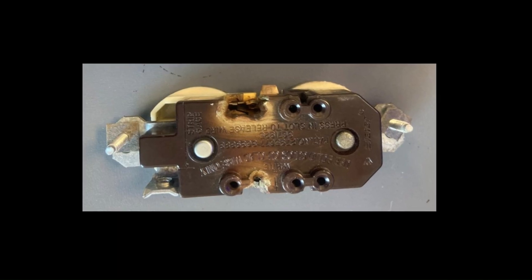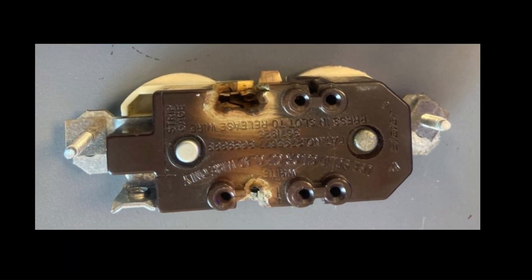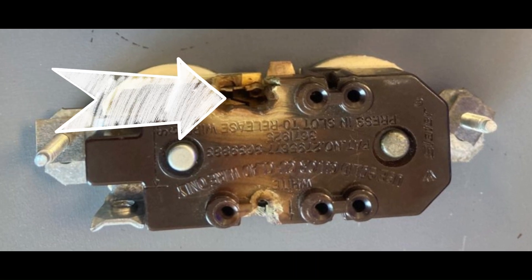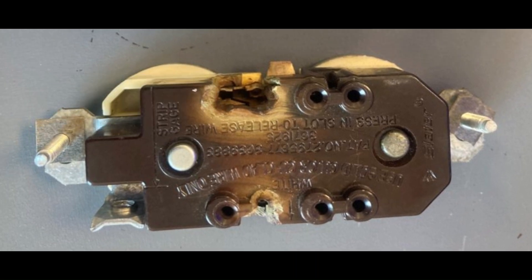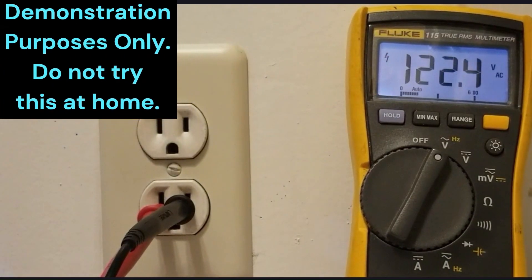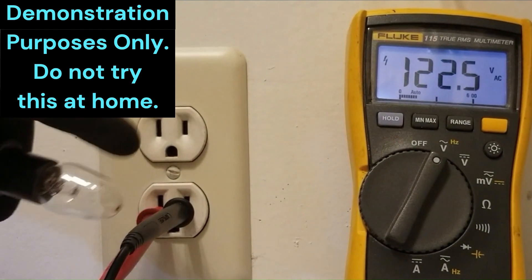Outlets that use backstab connections often develop loose connections over time due to resistance in the backstab terminals. As these connections degrade, they generate heat which can further worsen the problem. This can happen on either the hot or the neutral line.